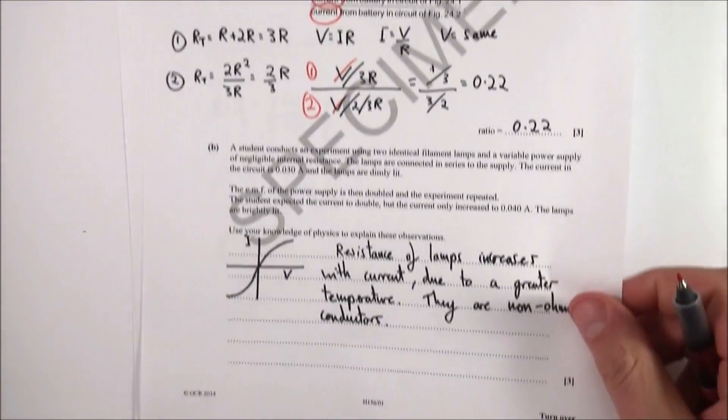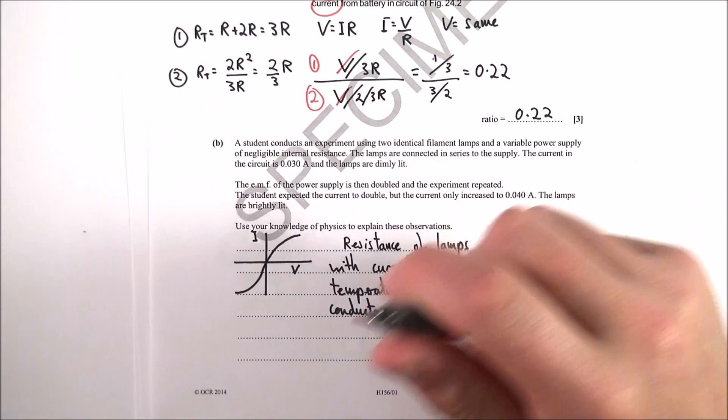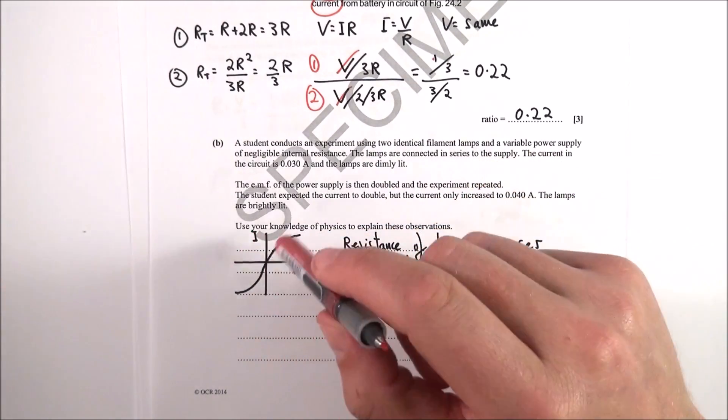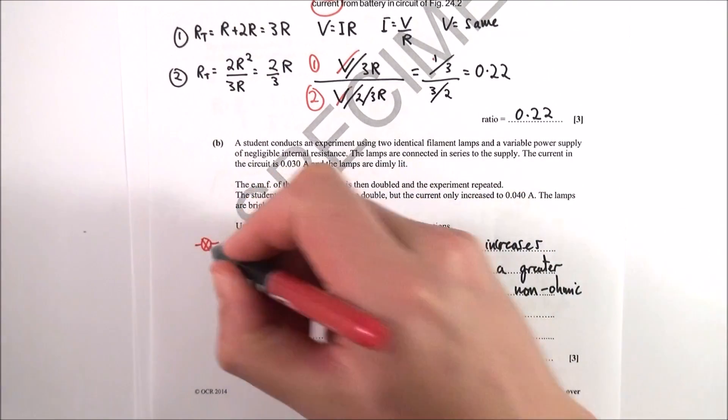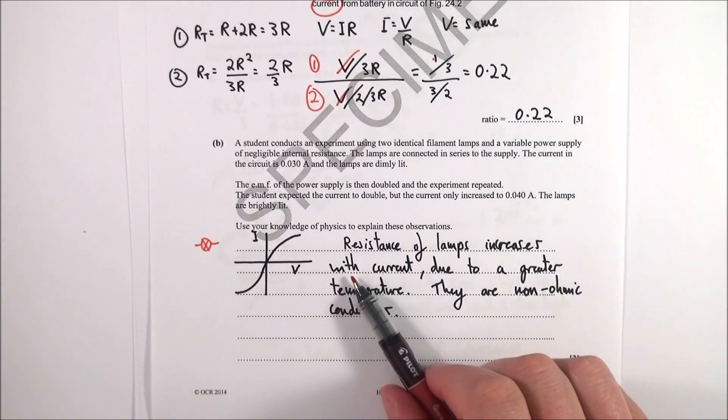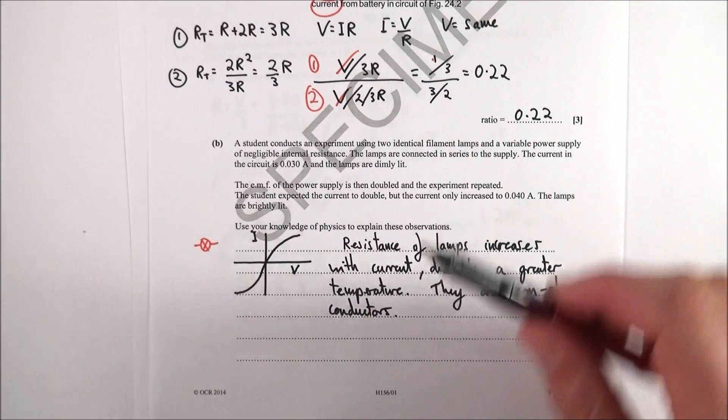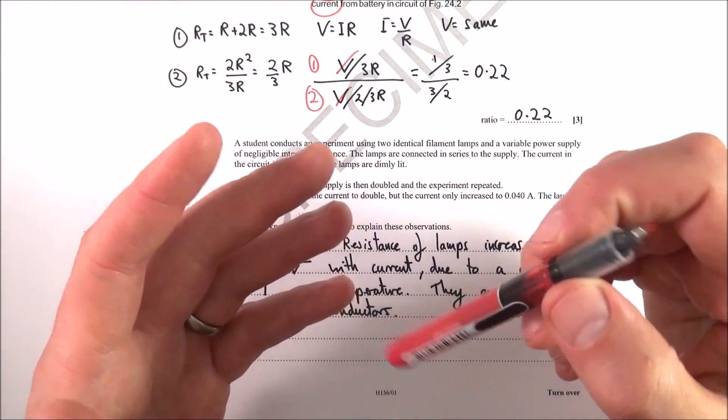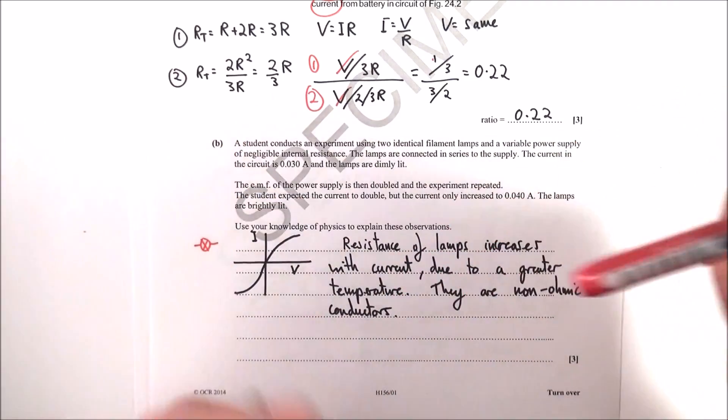The next bit, I don't think this is a great question. First I'm going to start out and I'm going to draw the graph on here so that whoever's marking this knows that I know my IV characteristics. These are the IV characteristics for a filament lamp, and basically as the resistance of the lamp increases, the current increases, the resistance increases, and this is due to the greater temperature. The more electrons you have, the more current flowing in that circuit, the more the electrons collide with the metal lattice, causing it to vibrate more and therefore having a greater resistance.